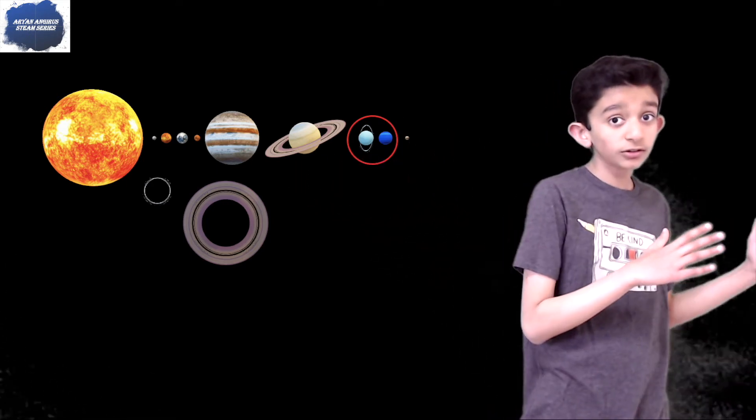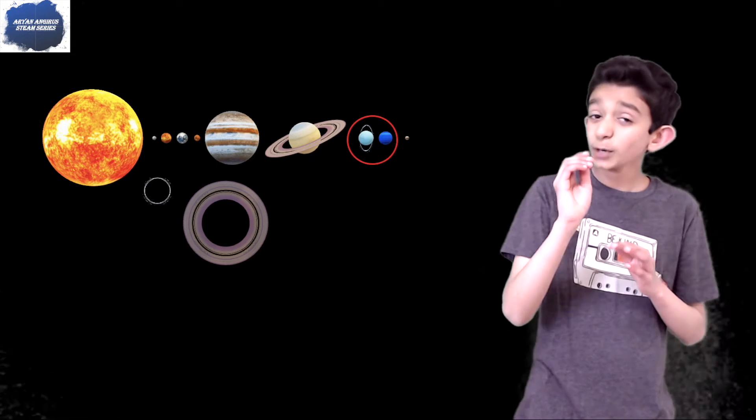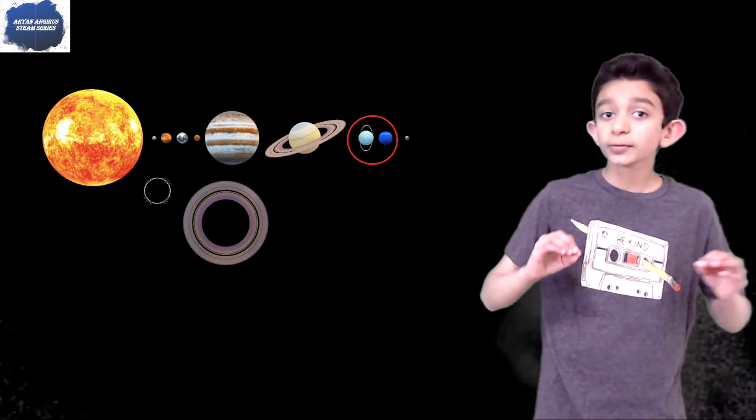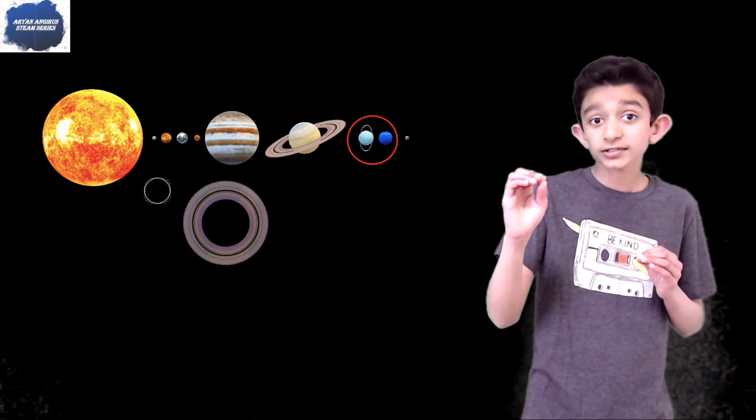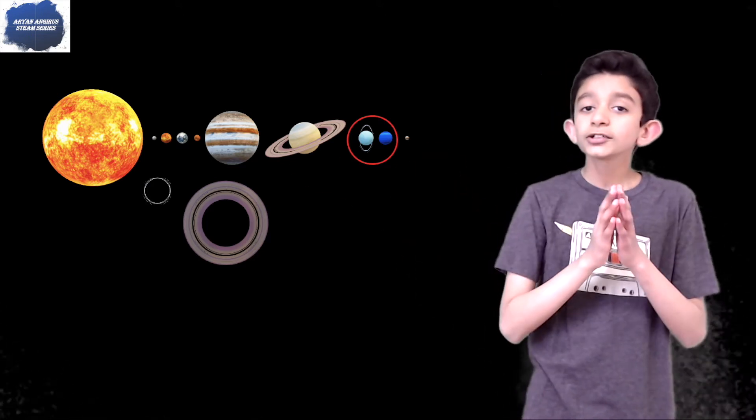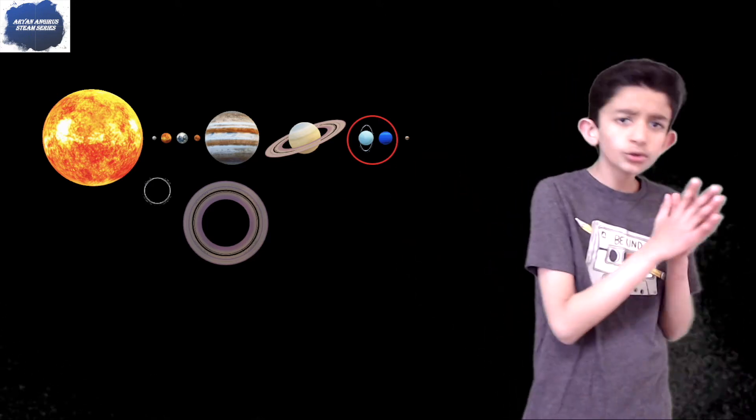The closer to the Sun you go, the hotter it gets, like on Mercury. See my previous video where I talk about every single planet in the solar system. Mercury is super hot in the day and freezing cold at night.